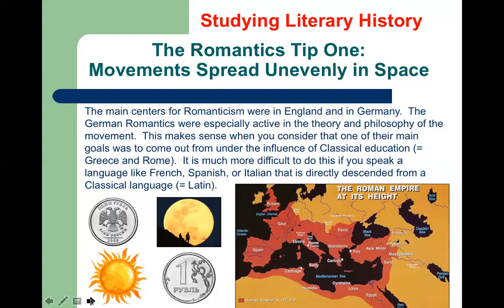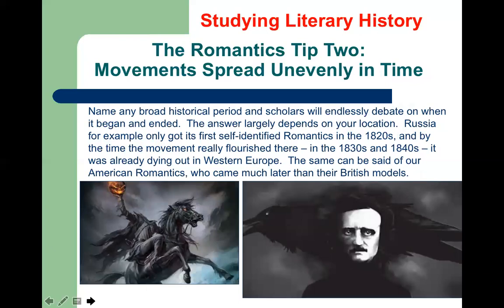Another thing related to this is that literary movements like Romanticism spread unevenly in time. When you name any era in literary history and put a date on it, you're going to find scholars who disagree on whether it began earlier or later. Russia, for example, really only had writers beginning to identify themselves as Romantics in the 1820s, by which time the movement was way past its prime in Germany and England. That also happened in America — we got our American Romantics like Edgar Allan Poe in the 1840s.